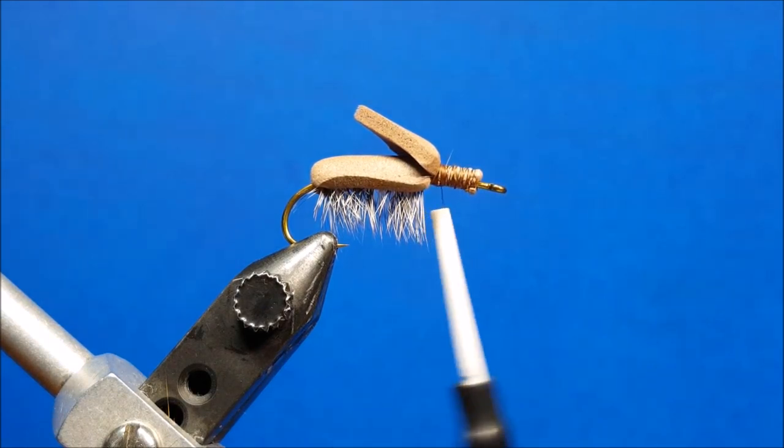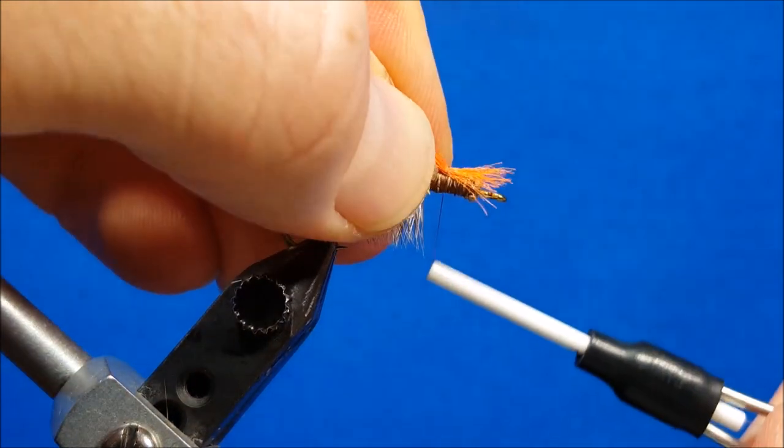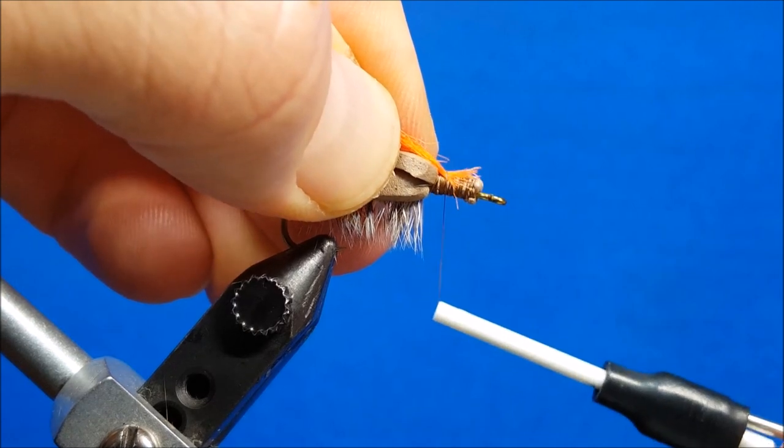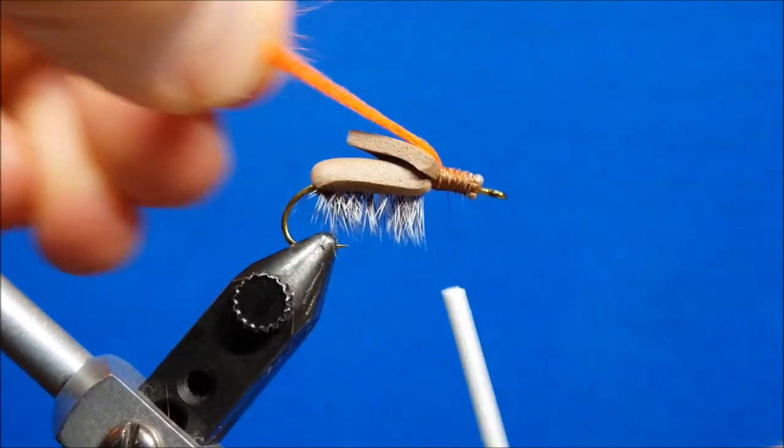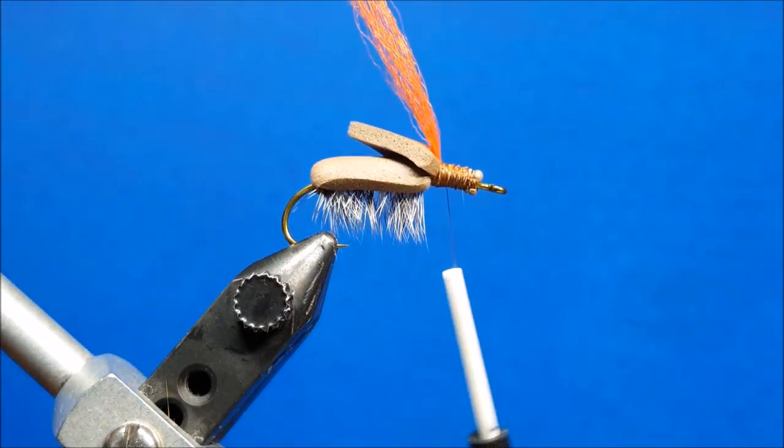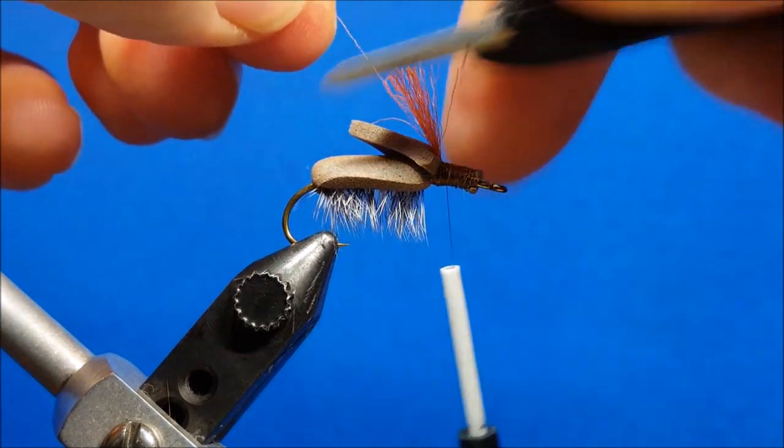After I get that secured, I'm going to come in here with a little bit of orange antron. Catch it by the tip, pull it back until I get about where I want it and secure it. This is just a nice little extra sight or an indicator for me. I'm going to cut this at about the same length as that foam wing, so just snip it off right there.